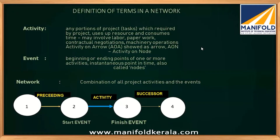Coming to the terminologies used in the network — one is activity. Activity is represented with an arrow. An event is nothing but the point in time that shows the starting or finishing of a certain activity — it is just a point of time. It can be a start event where you begin, or a finishing event where you end. It is also known as a node.